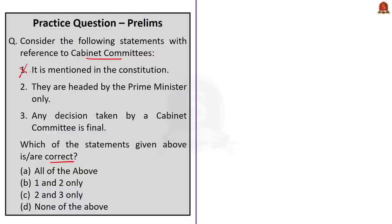The second statement says Cabinet Committees are headed by the Prime Minister only — this is also incorrect. We saw that Cabinet Committees are mostly headed by the PM but sometimes also by other Cabinet Ministers; for example, the Cabinet Committee on Parliamentary Affairs is headed by the Union Minister of Defence. The third statement says any decision taken by a Cabinet Committee is final — also incorrect, because the decision of a Cabinet Committee can be reviewed by the Cabinet. Since all three statements are incorrect, the correct answer is option D, none of the above.